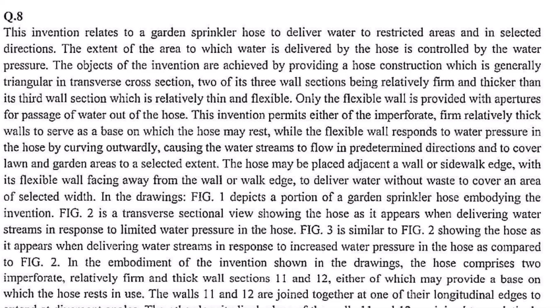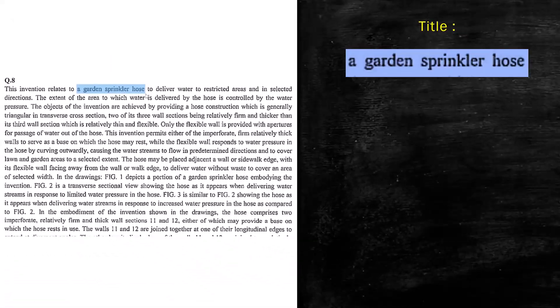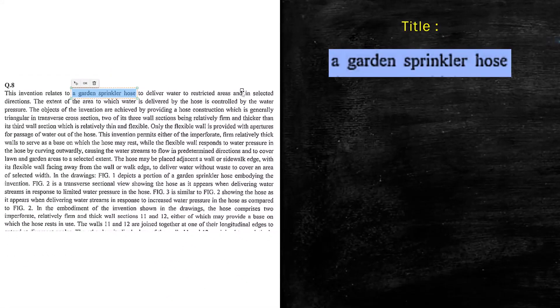Welcome back. Based on the reading of the disclosure, we know that this invention relates to a garden sprinkler hose. More specifically, they have provided a construction of the hose for meeting an objective of the invention. The first line of the disclosure provides us with the title: a garden sprinkler hose. This is your title.